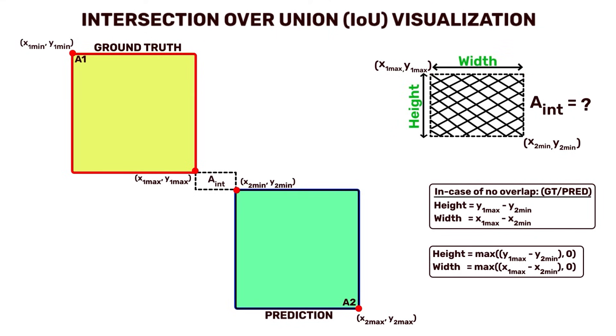However, to ensure that the height and width are always a positive value, we take the maximum of the result and 0. This prevents negative values from being considered as the height or width. This solves our specific purpose as either the height or width might be 0, and hence the area of intersection is also 0.